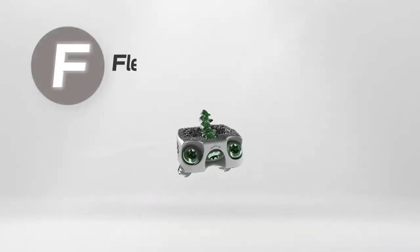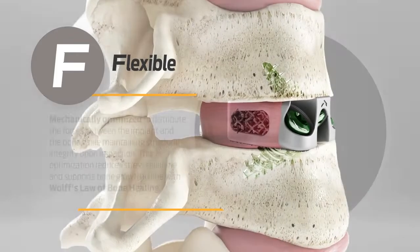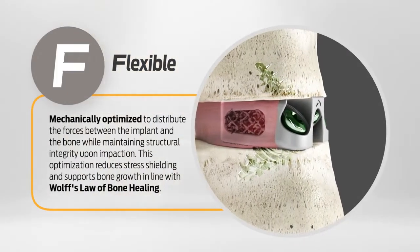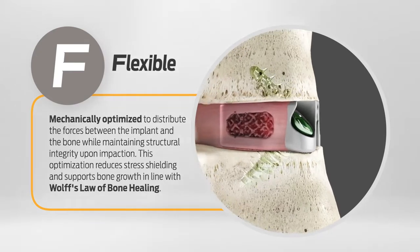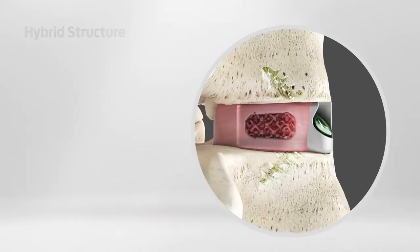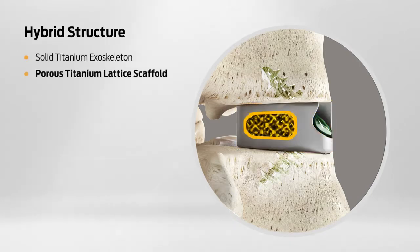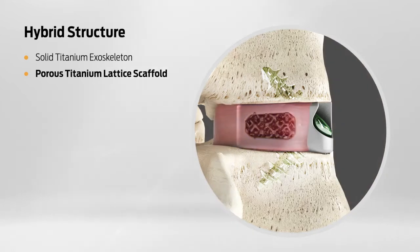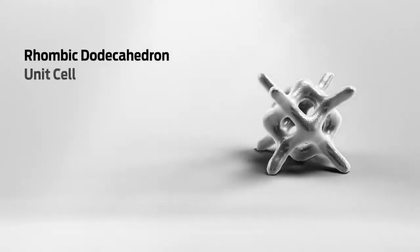F for Flexible refers to a hybrid structure that has been mechanically optimized to distribute forces between the implant and bone. Flex devices have a unique hybrid construction of a solid titanium exoskeleton with a titanium lattice scaffold that was designed using a stacked and randomized rhombic dodecahedron unit cell.